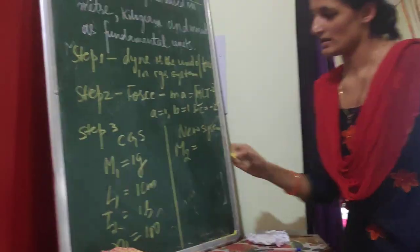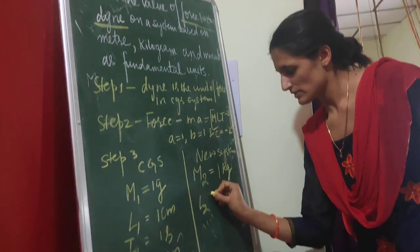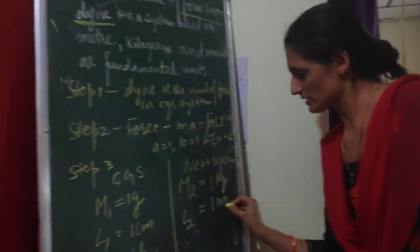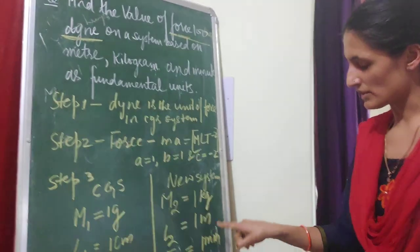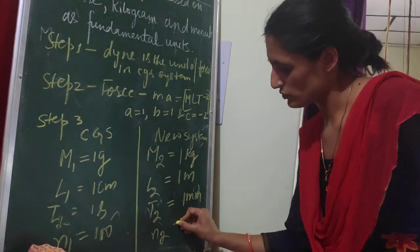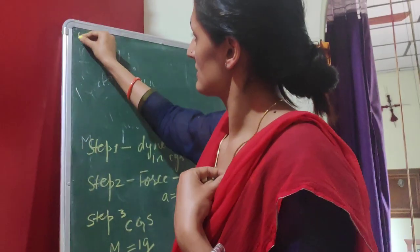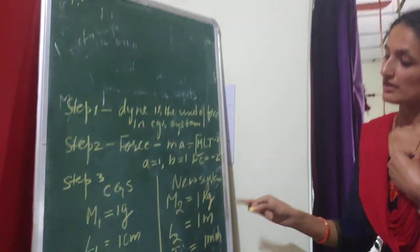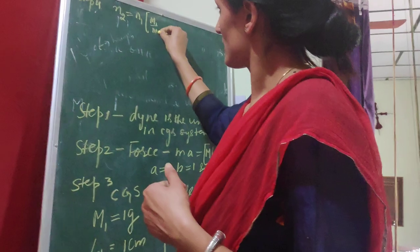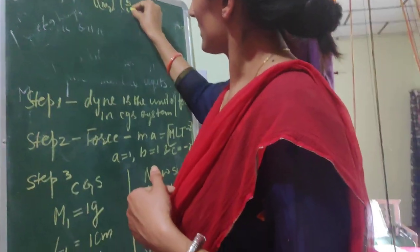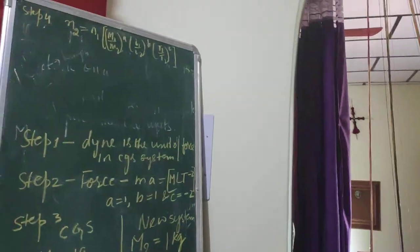For the new MKM system: M2 is 1 kilogram, L2 is 1 meter, and T2 is 1 minute (written as 'min' to avoid confusion with meter). N2 is what you have to find. Step four is writing the conversion formula: N2 equals N1 times (M1/M2)^a times (L1/L2)^b times (T1/T2)^c.